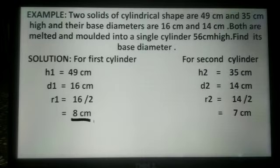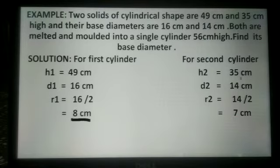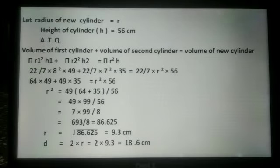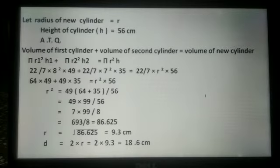For the second cylinder, its height h2 is 35 cm. Diameter d2 is 14 cm, and its radius r2 is 14 divided by 2, which is 7 cm. Now, let the radius of the new cylinder be r, and the height is given as 56 cm.